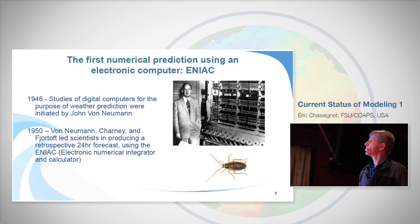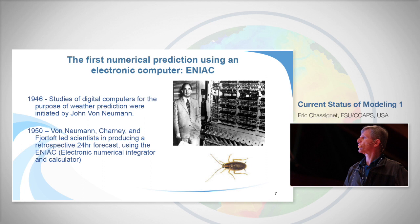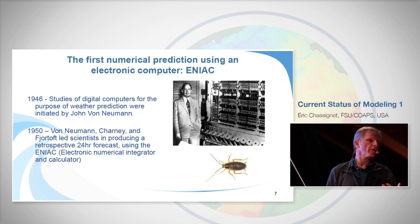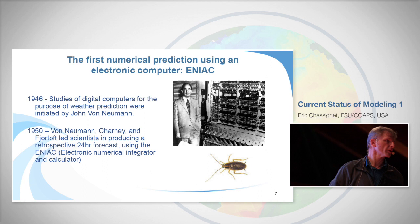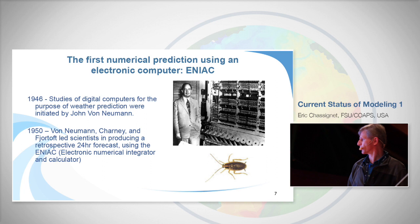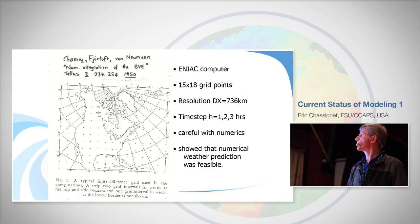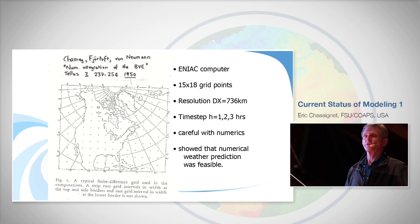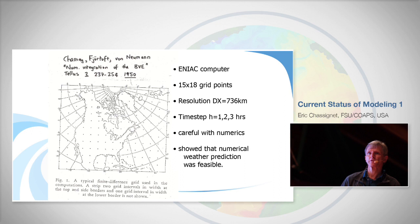The ENIAC computer was initiated by von Neumann and provided the first 24-hour forecast in the 1950s. The ENIAC used 15 by 18 grid points — a resolution of 700 kilometers or 7 degrees — with a time step of a few hours. Be careful with the numerics, but it showed that weather prediction was possible and that paved the way for more complex weather and ocean prediction models.